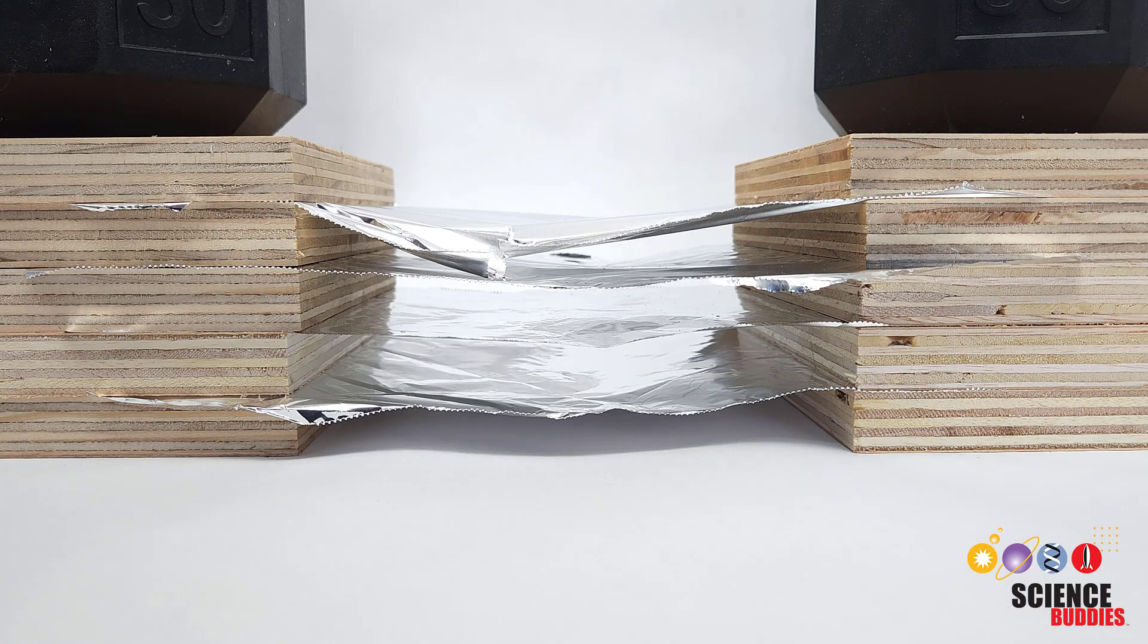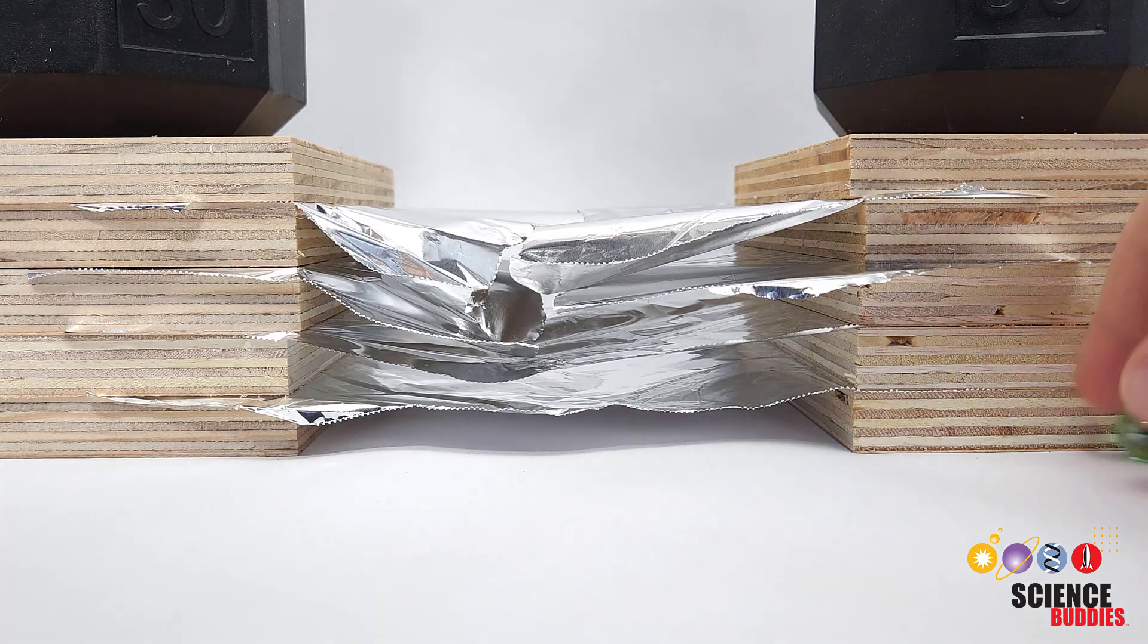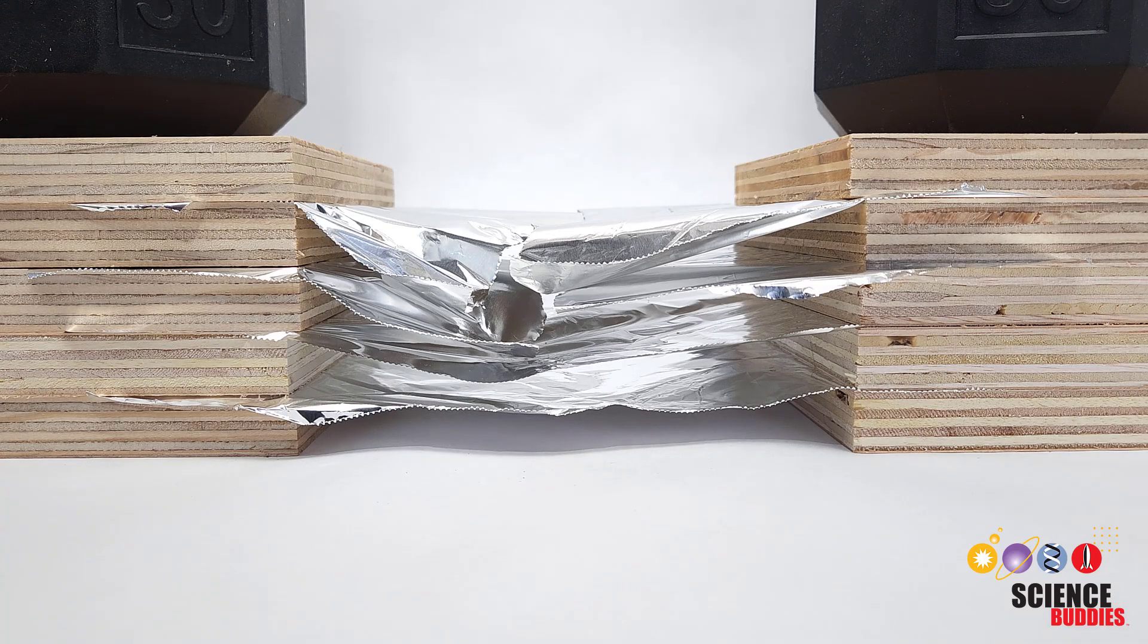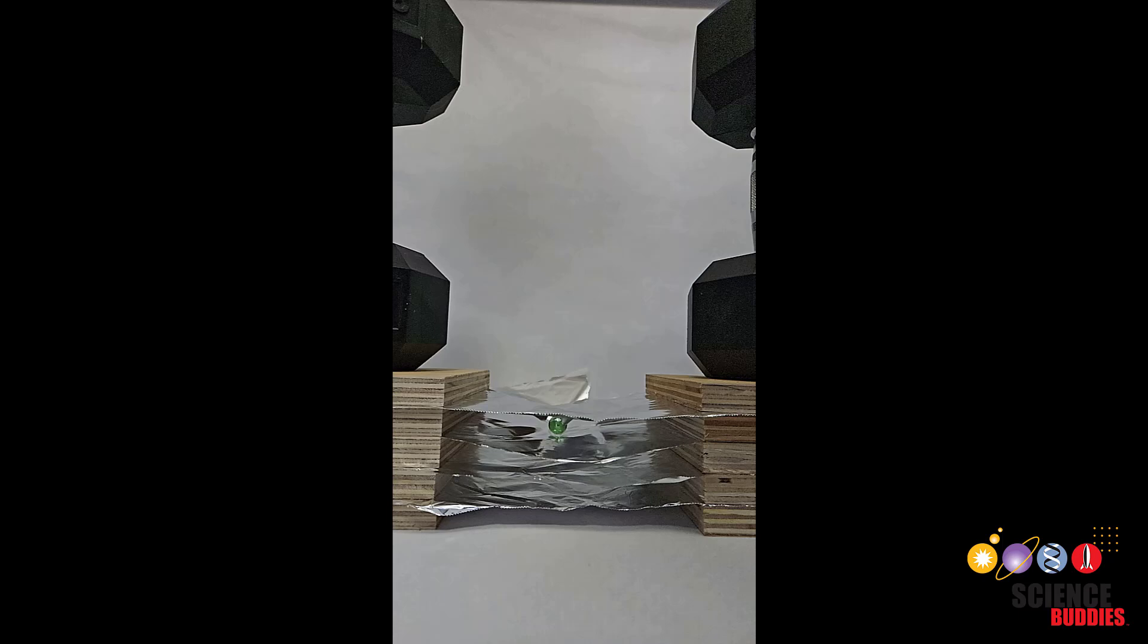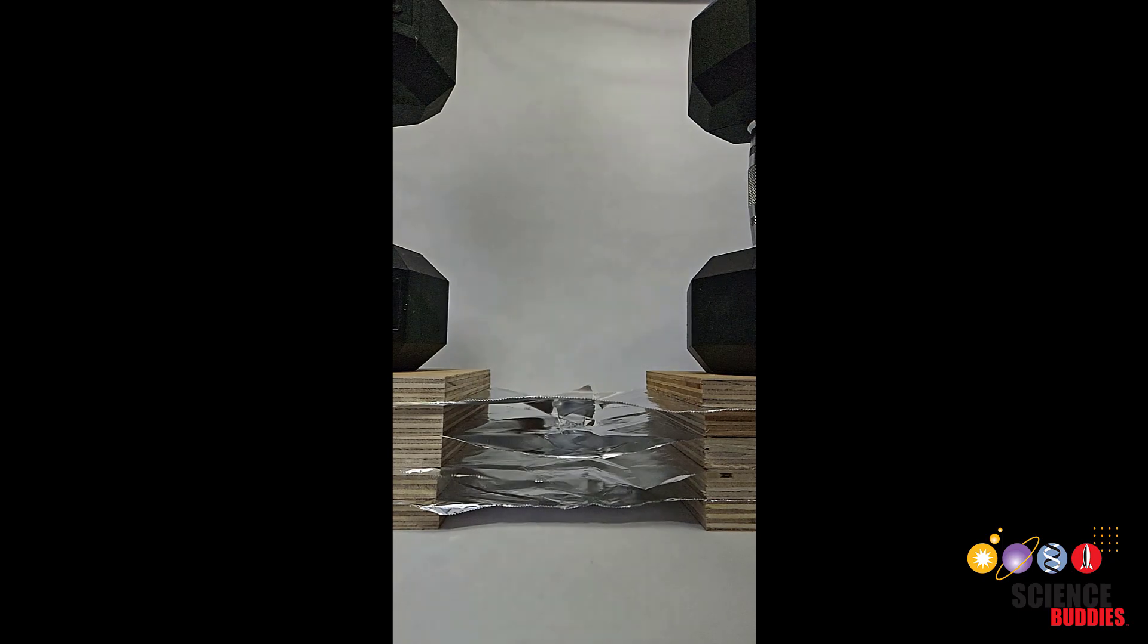This is a model of a Whipple shield. Whipple shields are used to help protect some spacecraft from impacts by space debris, because even something as small as a fleck of paint can do a lot of damage when it's traveling thousands of miles per hour.